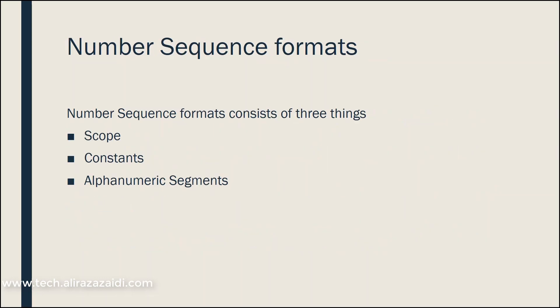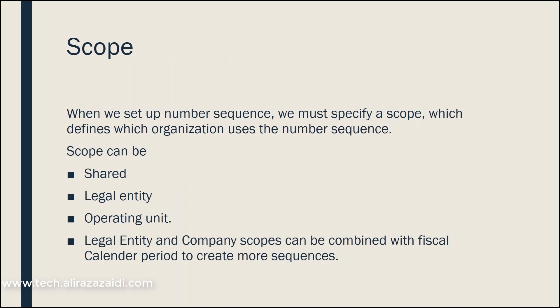A number sequence is based on three segments. The first is scope, the second is constants, and the third is alphanumeric. Scope means which organization uses the number sequence. For example, it can be shared, meaning multiple legal entities in an organization use that number sequence. It can also be based on a specific legal entity, or on an operating unit. A third option is a fiscal calendar period, which is based on legal entity and company scope.